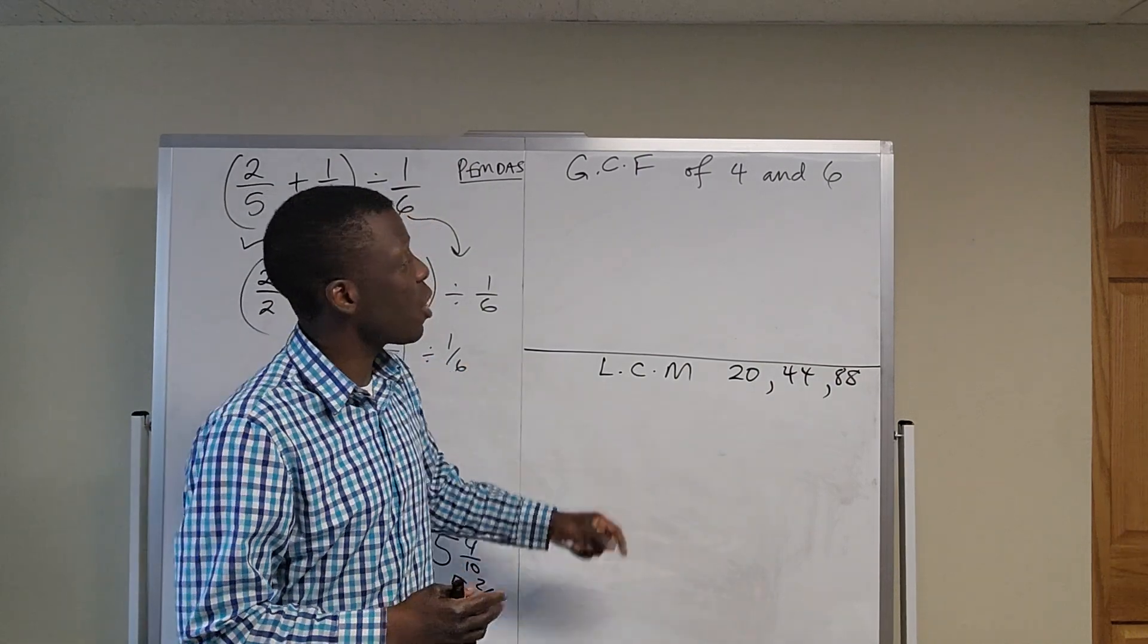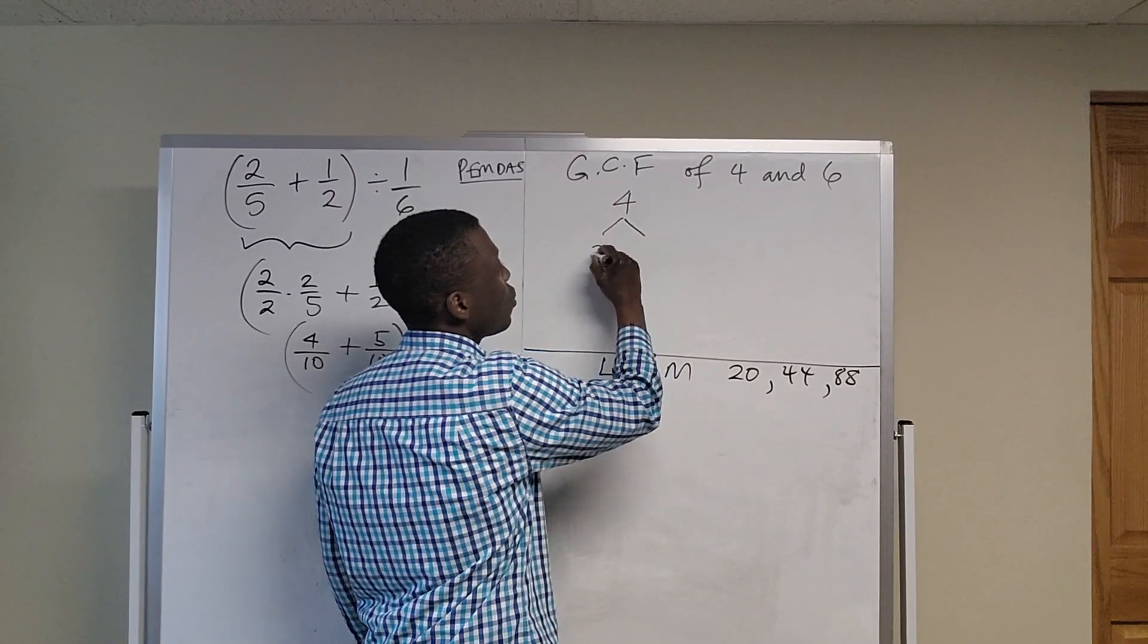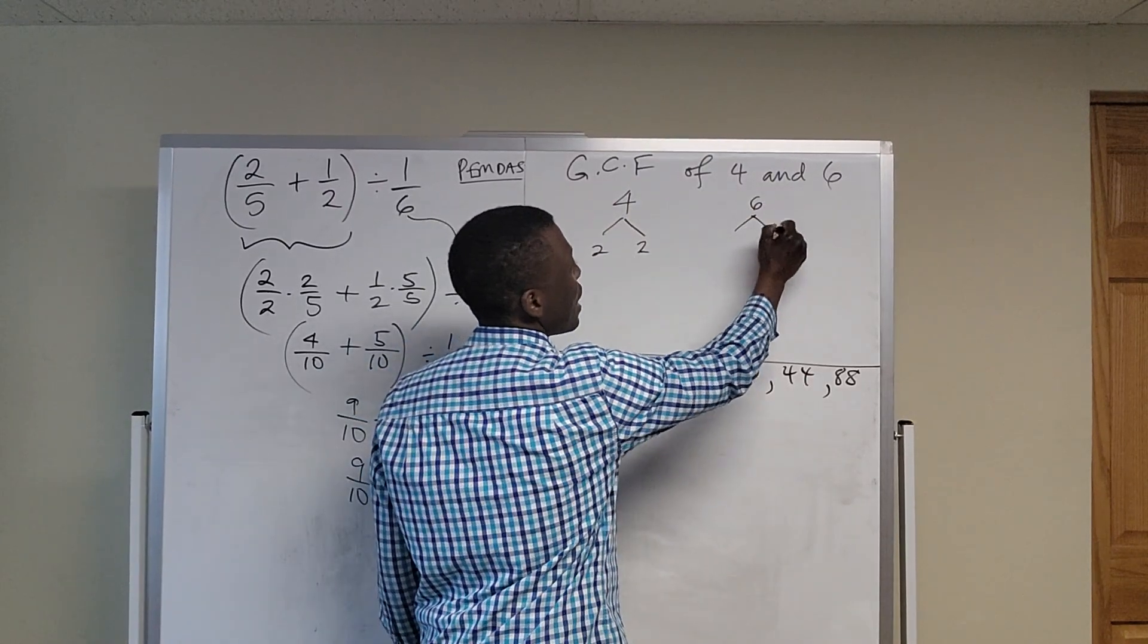What if someone says to find the greatest common factor of 4 and 6? Well, you can prime factorize 4 as 2 times 2 and 6 as 2 times 3.